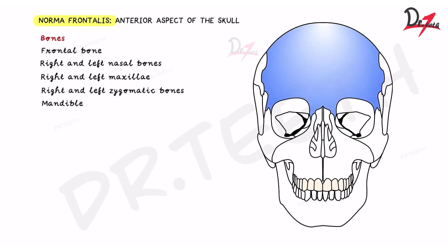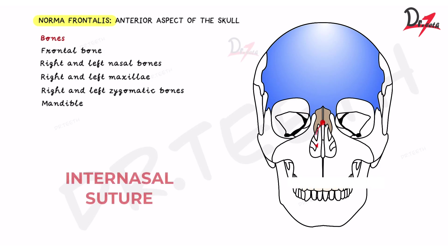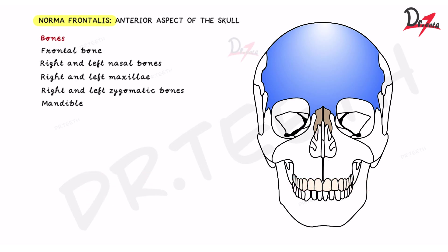Then we have the nasion. To understand the nasion, we first look at the sutures involved. Between the frontal bone and the nasal bones we have the frontonasal suture, and between the two nasal bones we have the internasal suture. The nasion is the median point where the internasal and frontonasal sutures meet.